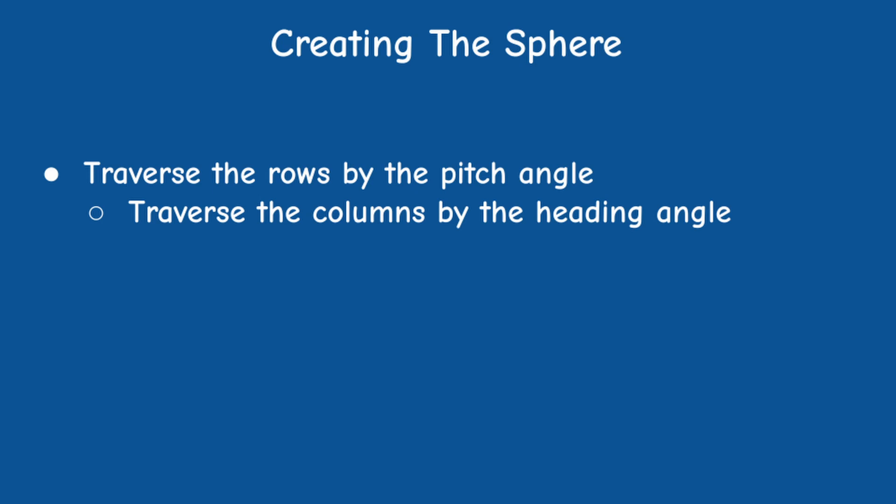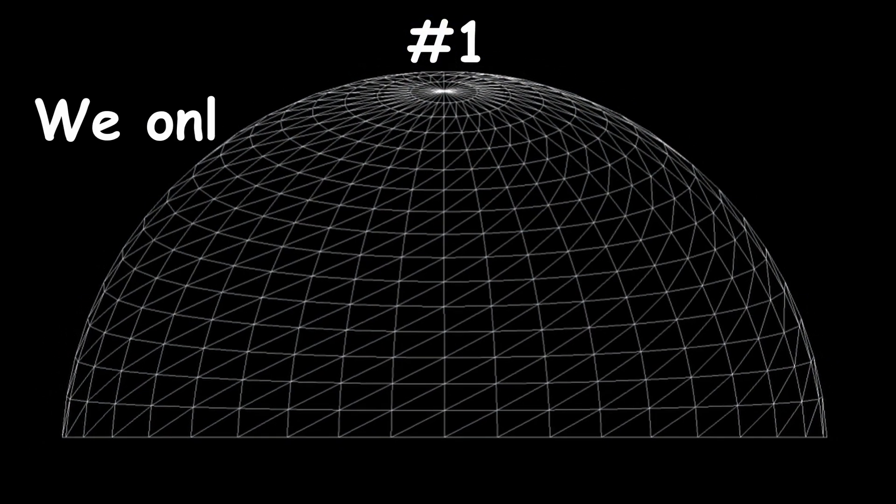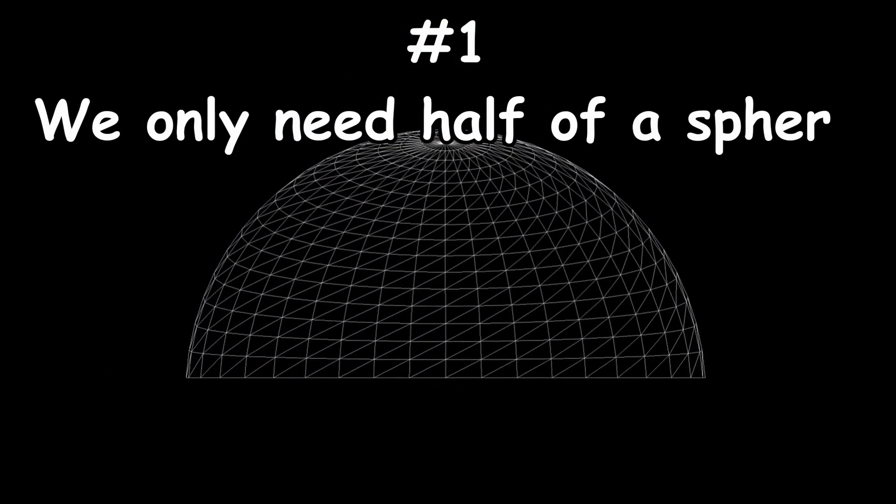The creation process of the sphere will include two for loops, one for the pitch angle and one for the heading angle. At each iteration we will translate the current spherical coordinates to Cartesian coordinates and this will allow us to construct the triangles as usual. A few things to note here. First, we only need to construct half of the sphere.